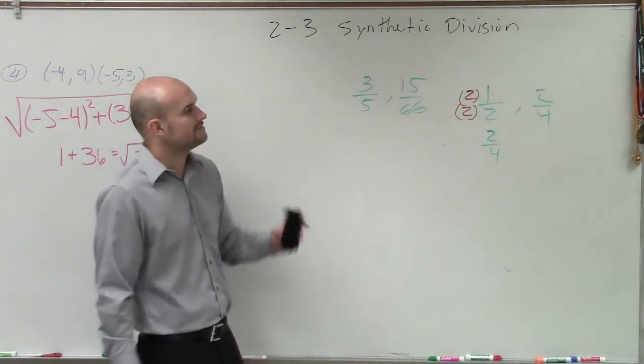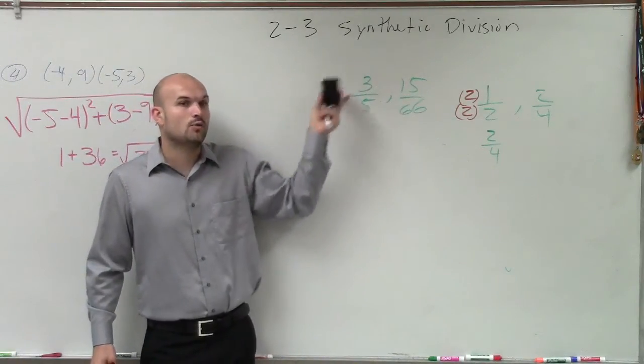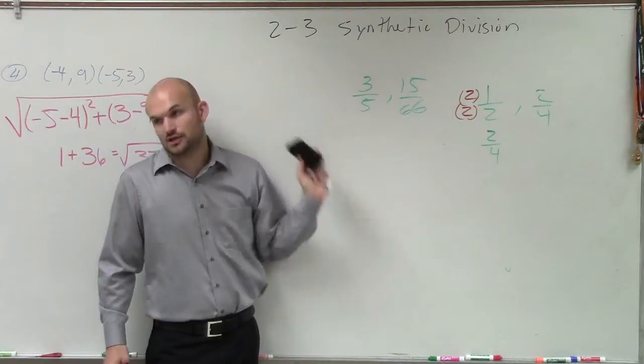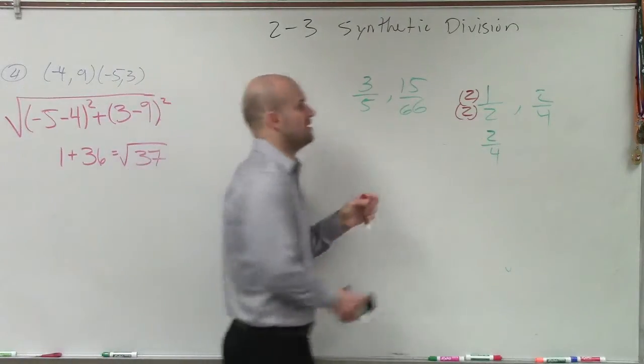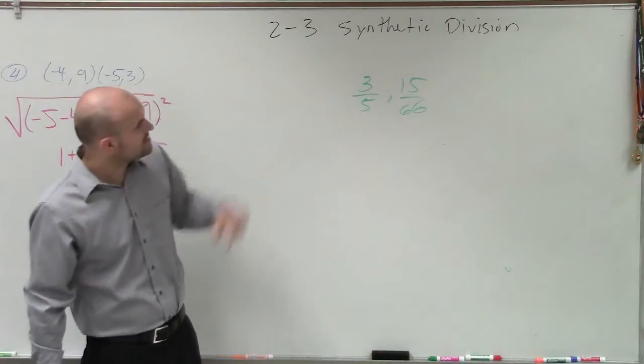So what I need to do is to be able to determine, is there a multiplier that I can multiply one of these ratios by to get the other ratio? And usually we like to multiply by integers. You can multiply by fractions though if you like. So let's go and take a look at this.